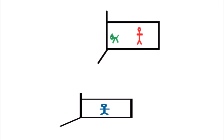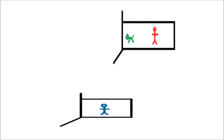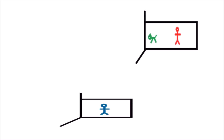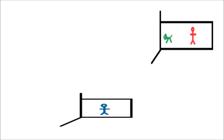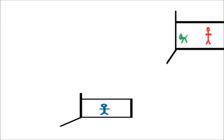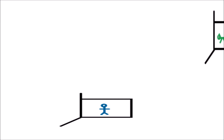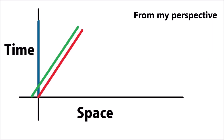Now I will see this graph. This graph has an x-axis — x-axis will be space and y-axis will be time. Now I will show you the space-time graph. We are going to draw, and we will draw about the value of our friend.